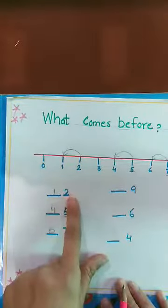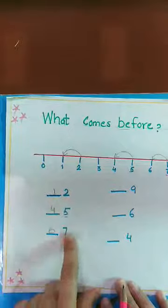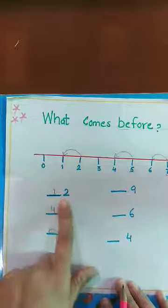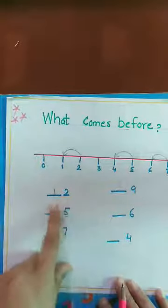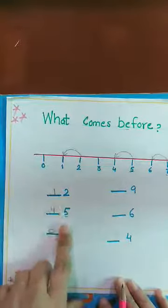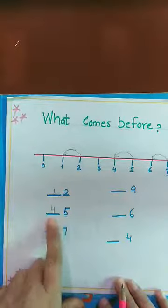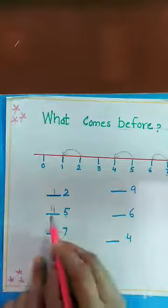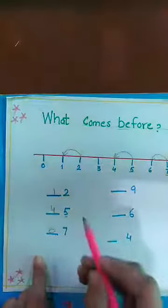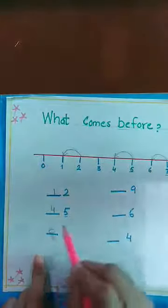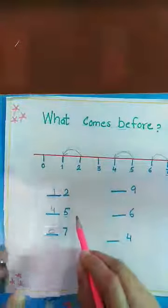Before means pehle. For example, yahan humare paas numbers dekhe hue hain. Toh maine aapse puchha what comes before two — aap ne bola one. Then what comes before five — four. Toh yeh kya hai? Inse pehle ke numbers hain — jo in numbers se pehle aate hain.